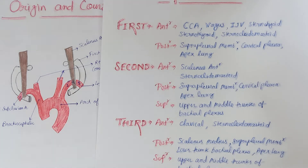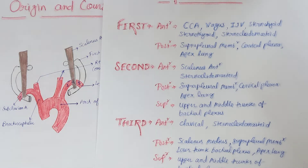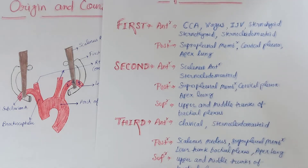Relations of the second part of the subclavian artery: anteriorly, the sternocleidomastoid and the phrenic nerve, with the prevertebral fascia posteriorly, and the suprapleural membrane, cervical pleura, and apex of the lung posteriorly. Superiorly, it is related to the upper and middle trunks of the brachial plexus.